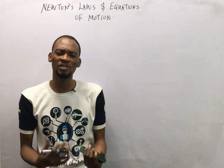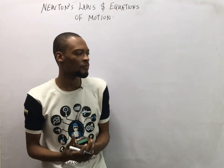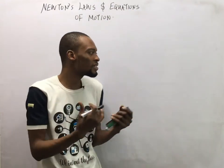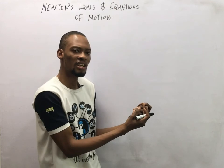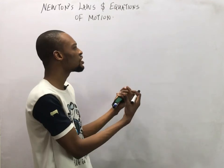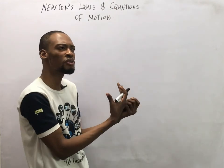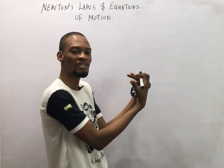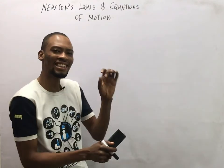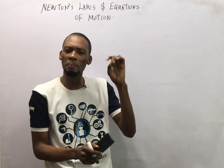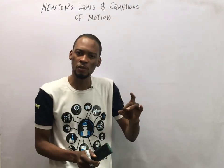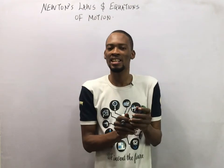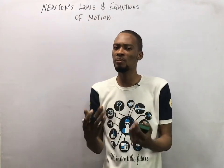The first law of motion states that a body at rest will continue to be at rest, and if it is in motion, it will continue in uniform motion in a straight line, unless it is acted upon by a force. So forces are agents that cause a change of motion.